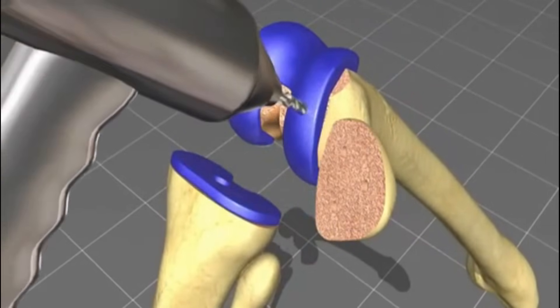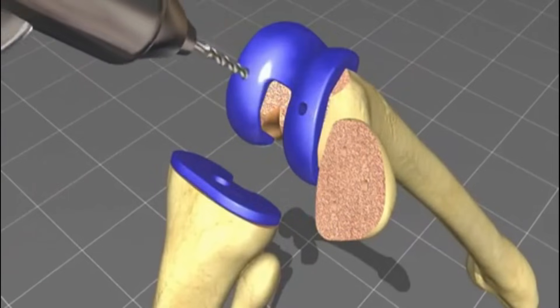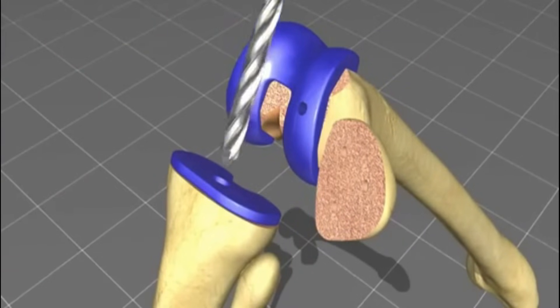Additional drill holes improve the fixation of the prosthetic device into the femur and also at the tibial side.